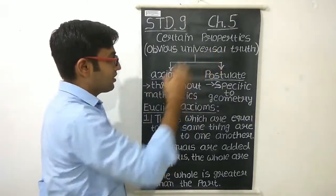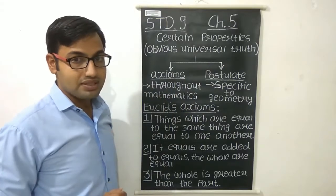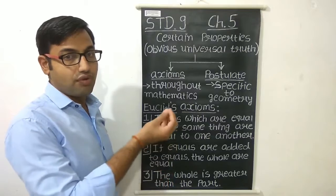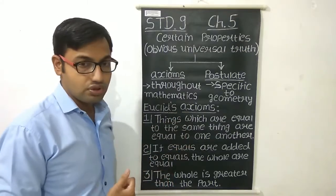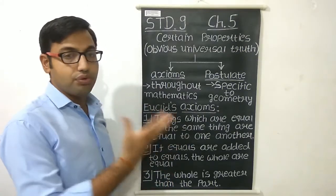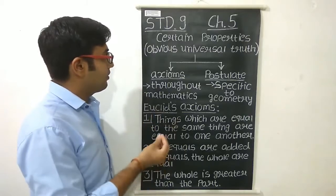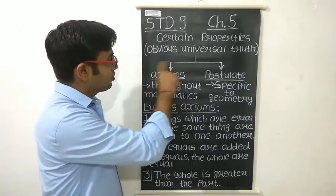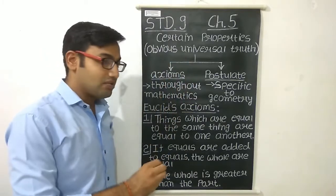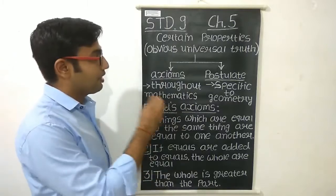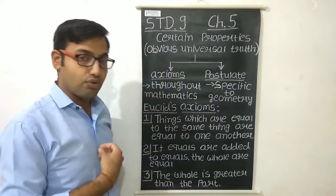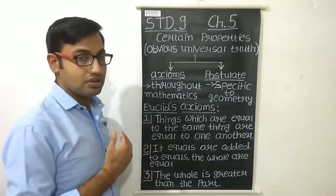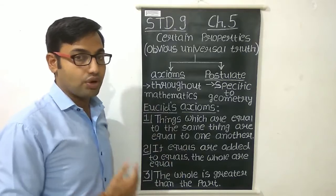What we can say as an obvious universal truth — one example is that the sun rises from the east direction. That is an obvious truth. There is no need to prove that statement. In the same way, the certain properties that Euclid assumes are also obvious universal truth, and that is why those properties have no proof — we just have to accept them. On the base of those assumptions, we can prove other statements.